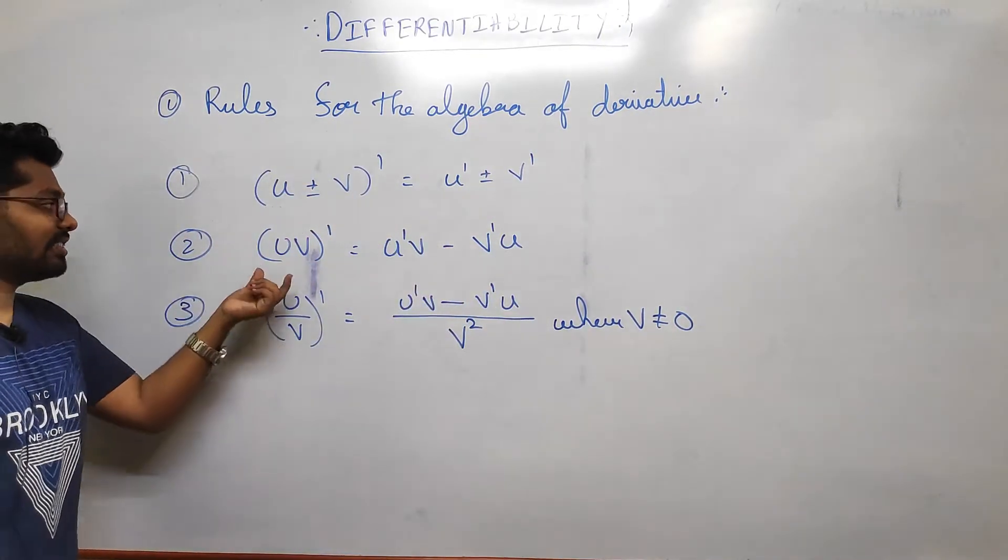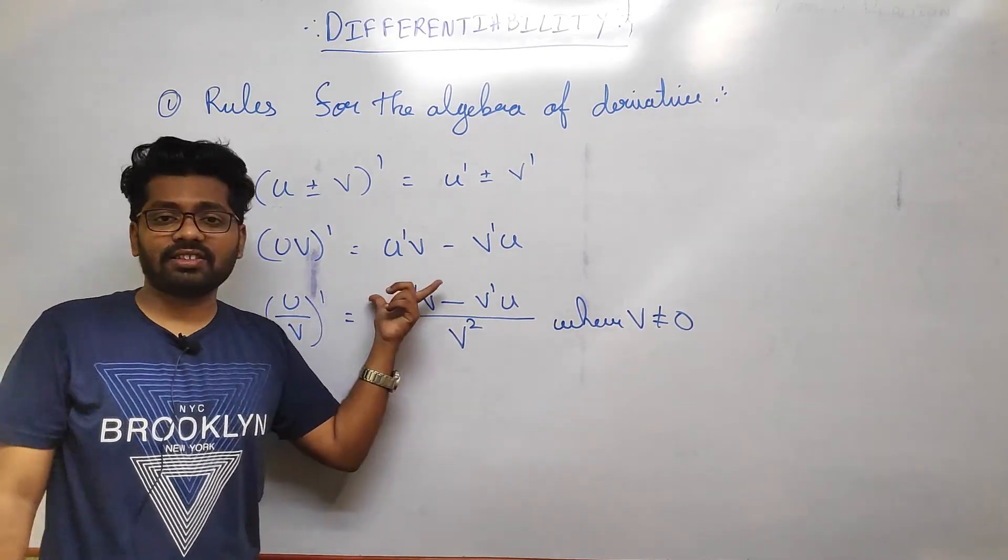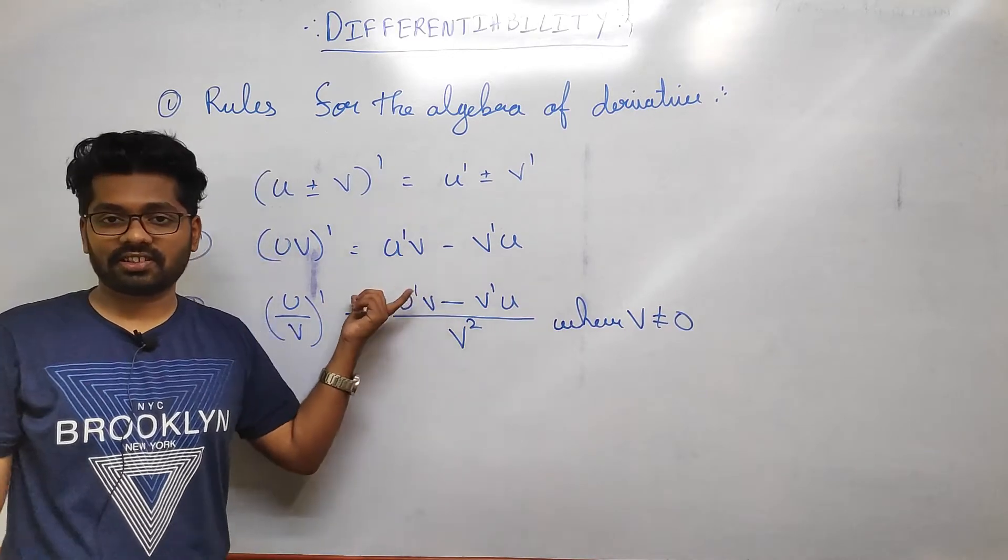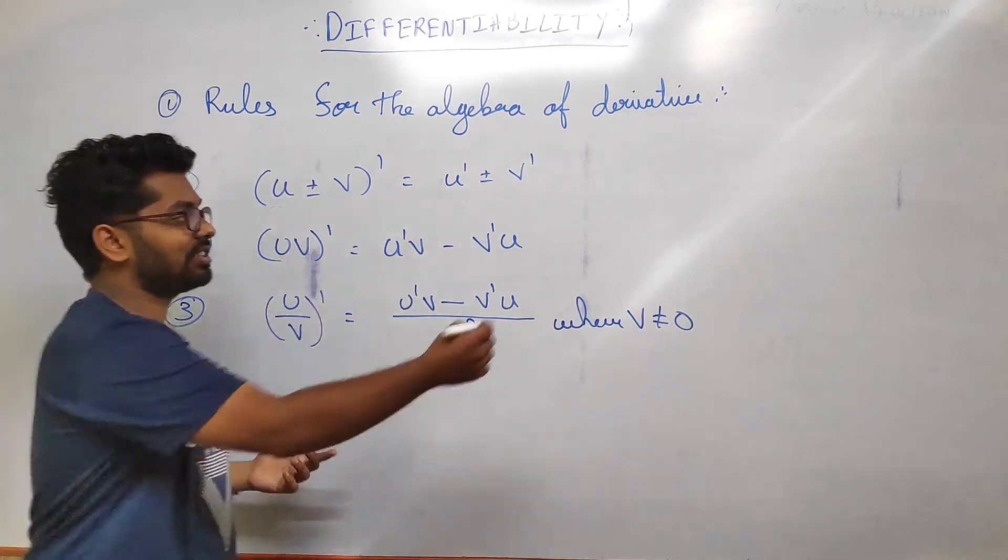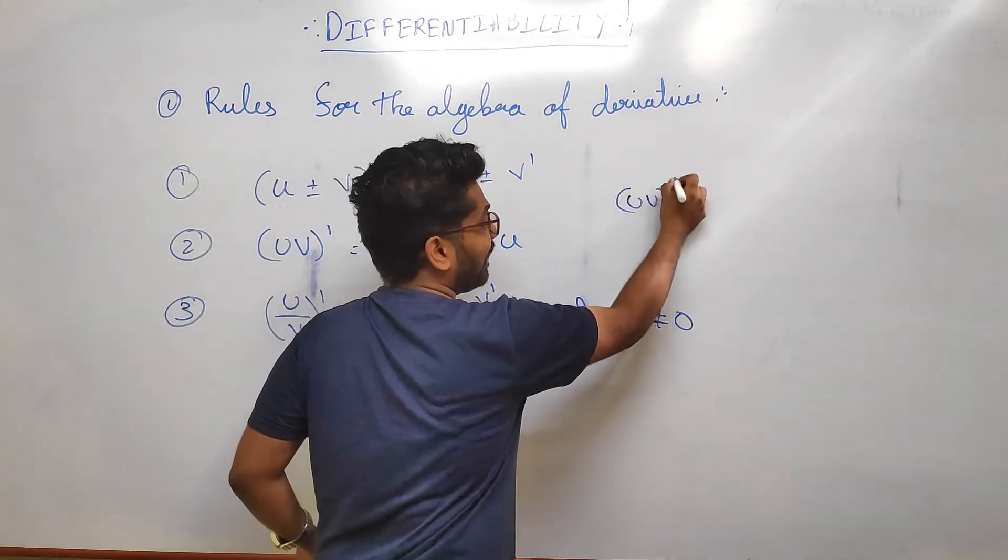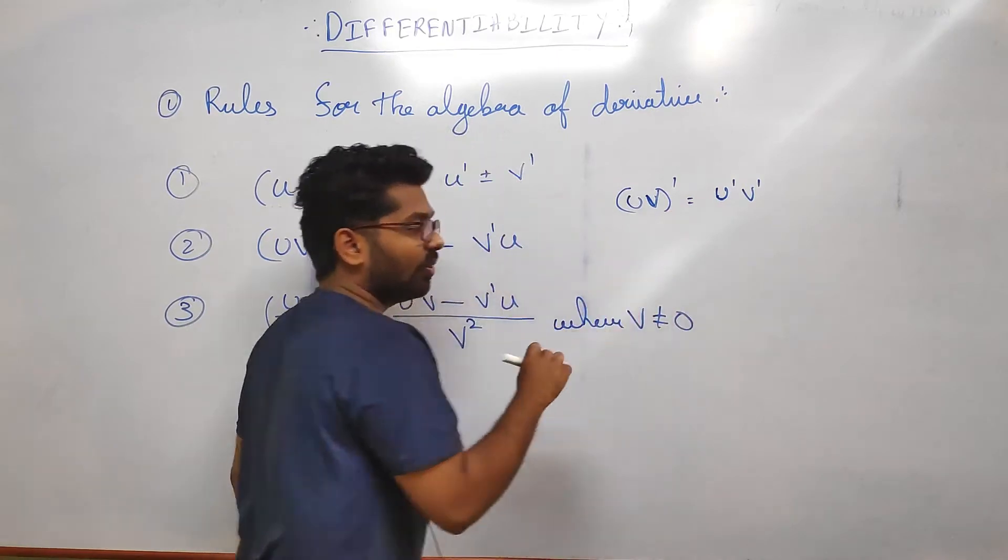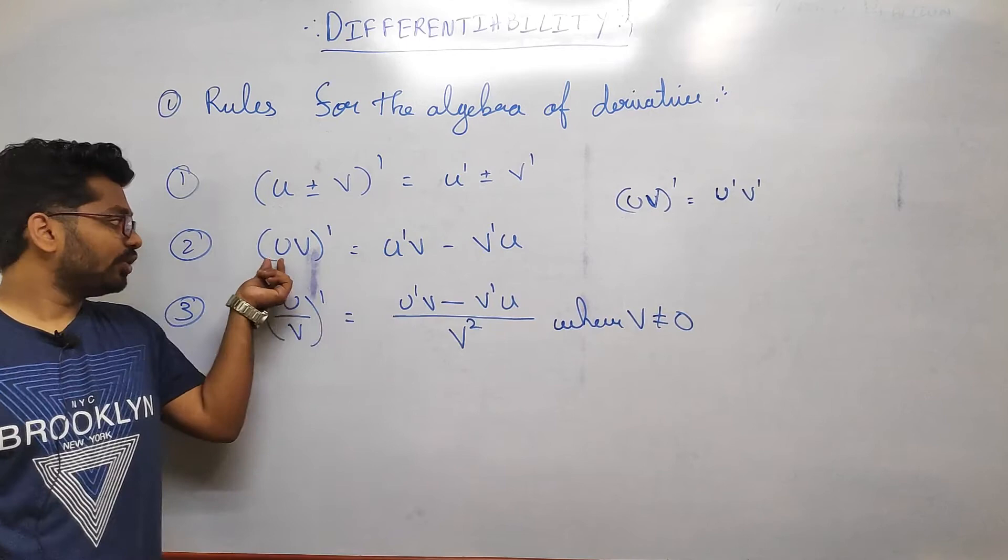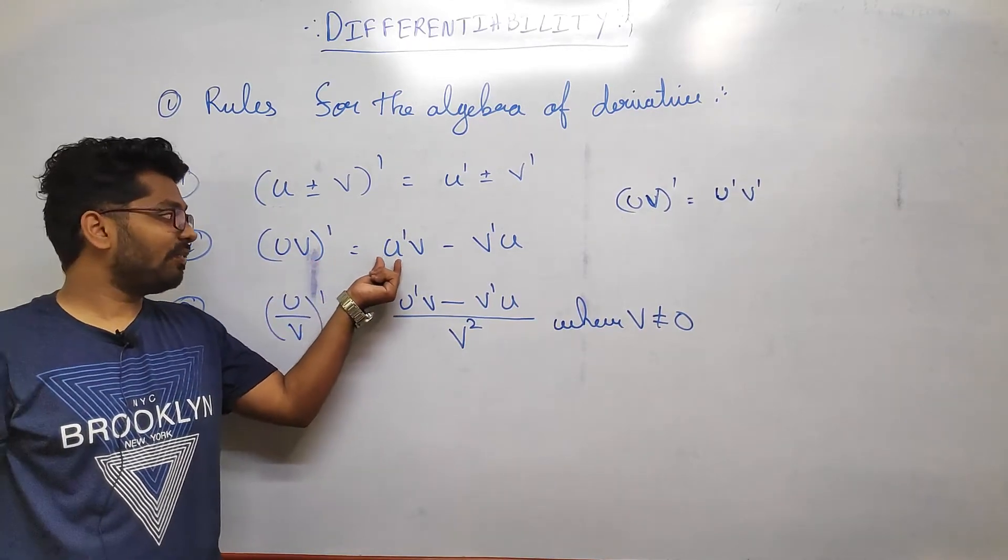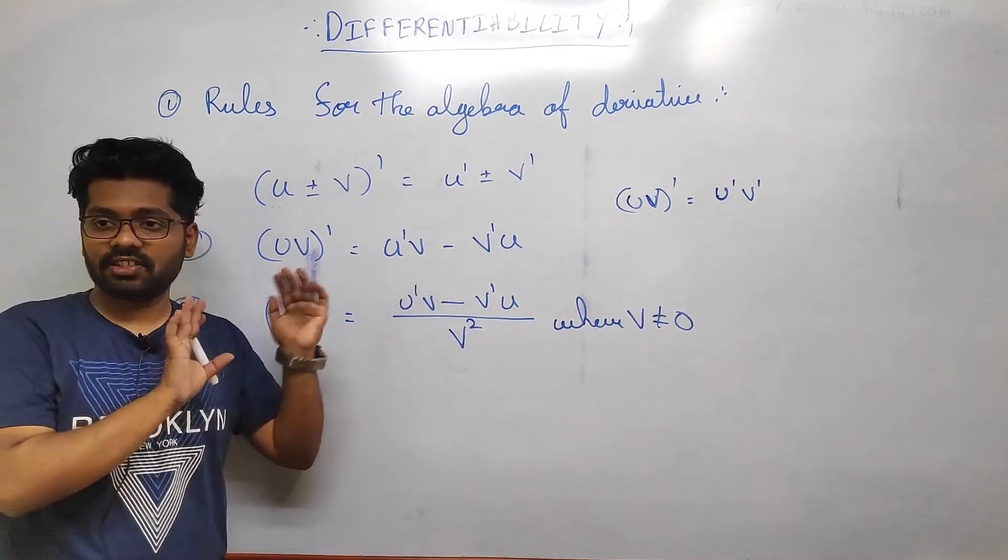This is very important - product rule. Everyone makes small or big mistakes here. (uv)' - you cannot write it as u'v'. No, you cannot write it. You have to use this equation: u'v + uv'. Take differentiation of the first term, keep second term as it is - plus, not subtraction.